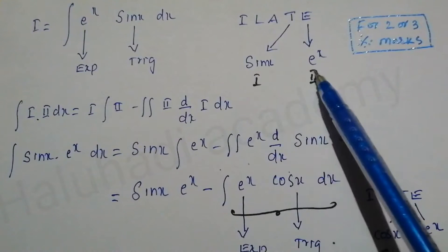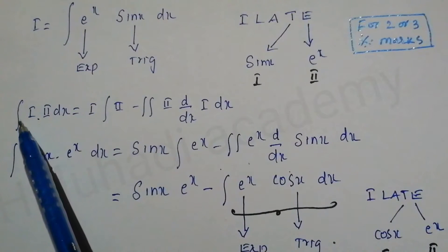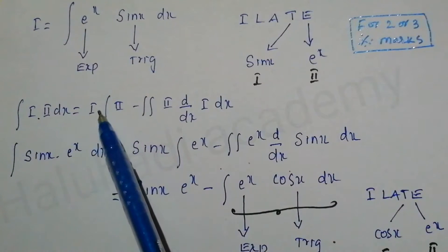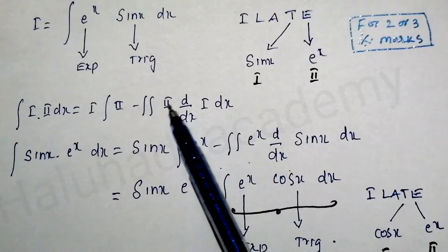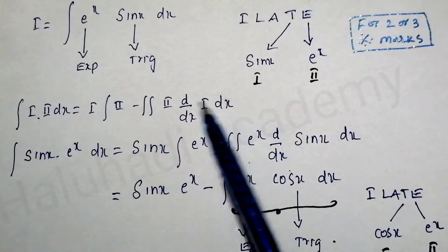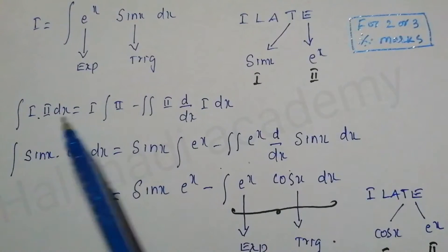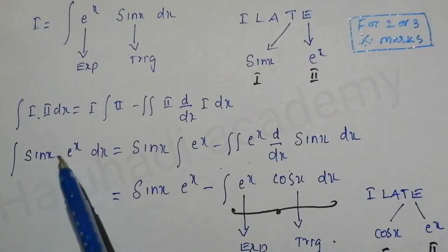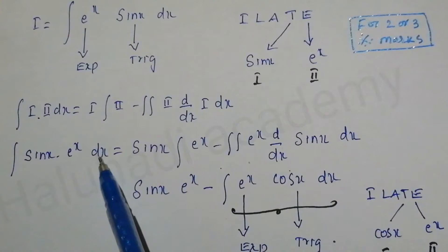The formula for integration by parts is: integral of first × second dx = first function × integral of second function minus integral of [integral of second function × d/dx of first function] dx. Here, sin x is the first function and e^x is the second function.